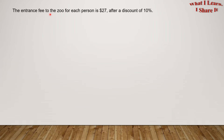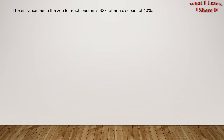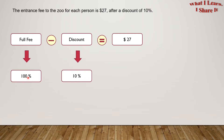The entrance fee to the zoo for each person is $27 after a discount of 10%. Step 1 is finding how many dollars make 10%. What this means is the full fee minus discount equals $27. If we consider the full fee as 100%, then we have the discount of 10%, and 100% minus 10% equals 90%.